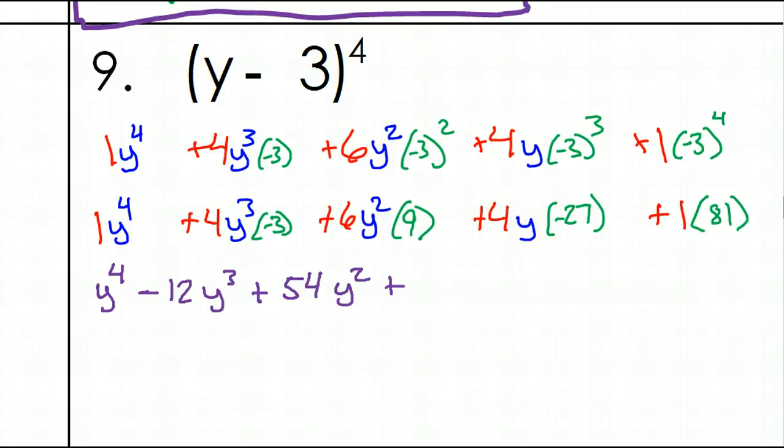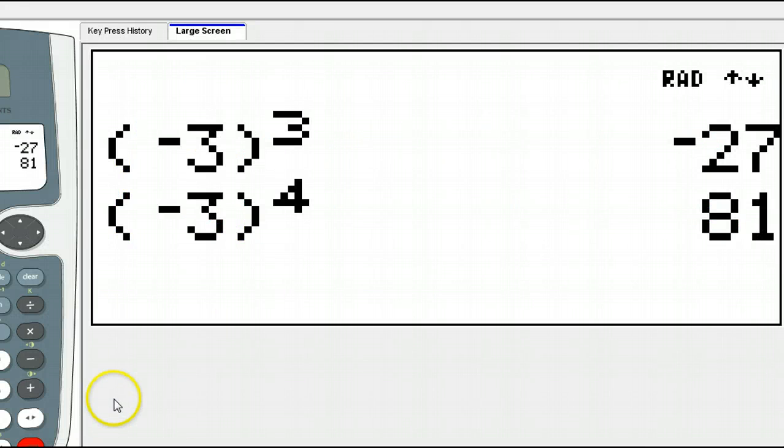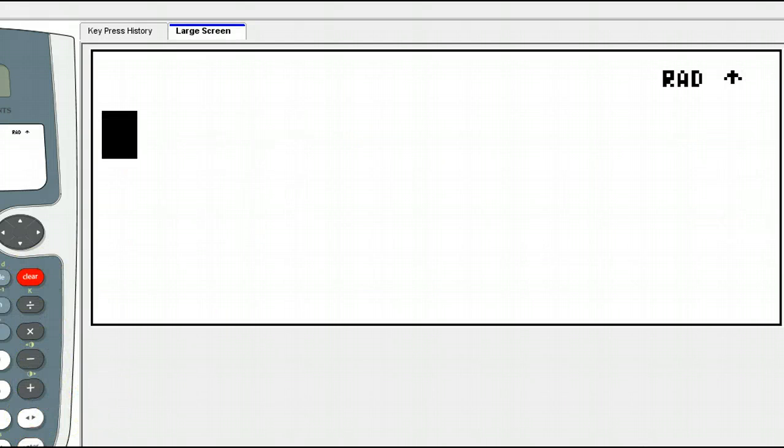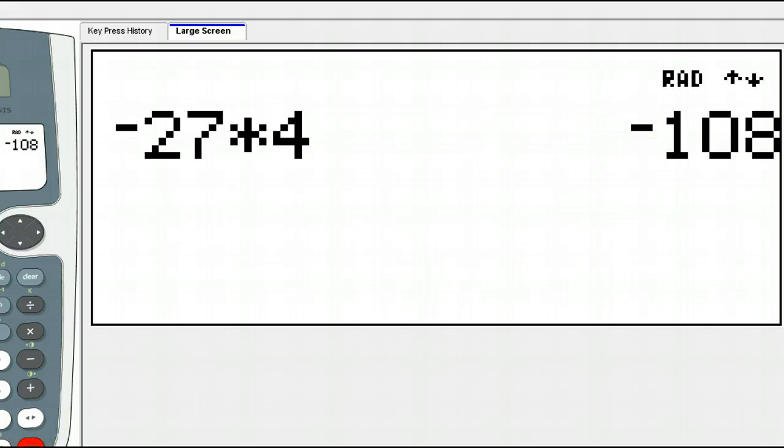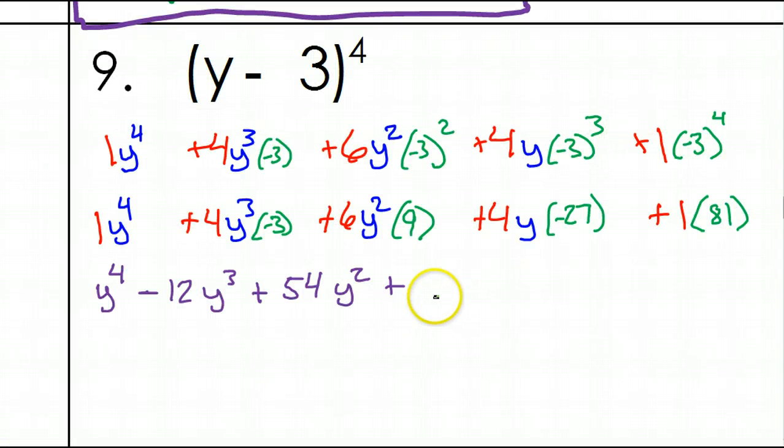What do we have here? We have negative 27 times four. I'm going to have to check that out real quick. So, that's negative 27 times four. Or, it's negative 108. So, negative 108y. And, then, of course, we just have the 81. So, plus 81. So, that's it. This would be your answer for number nine.